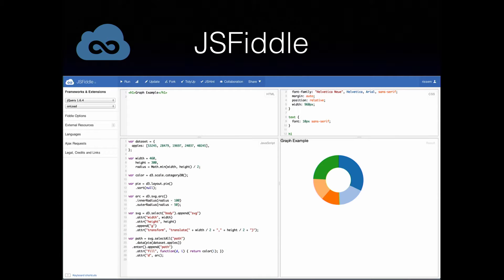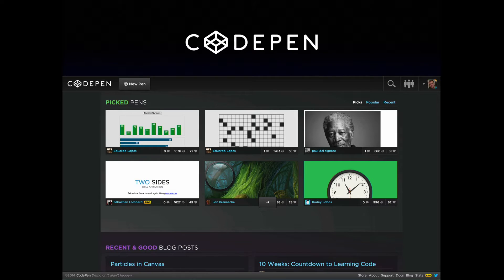A quick show of hands — how many of you are familiar with JSFiddle? Okay, so most of you. For those of you that aren't familiar, JSFiddle is a great way to test out client HTML, client JavaScript, client CSS, and then once you have something cool, you can share it with other people. CodePen is another site that is a lot like JSFiddle. You see a lot of people putting up portfolios of really cool HTML5 pens on CodePen, so I'd encourage you to check that out as well.